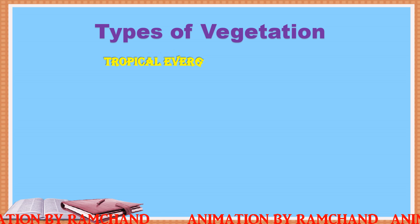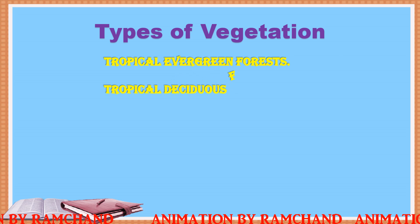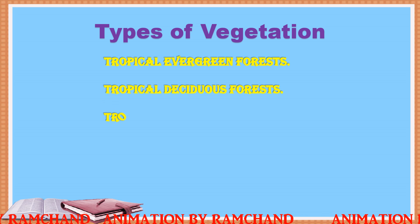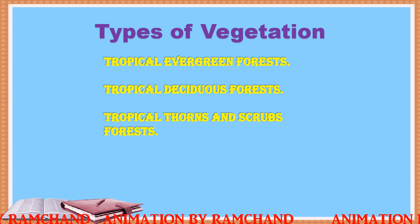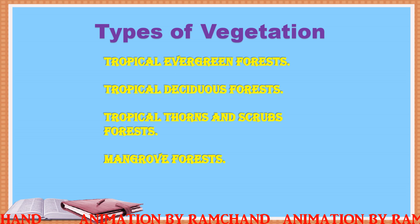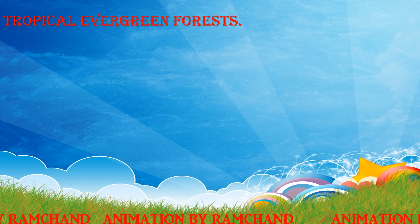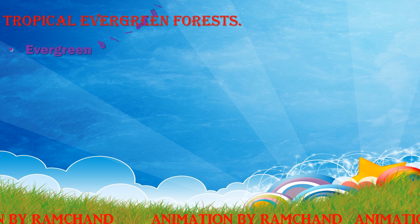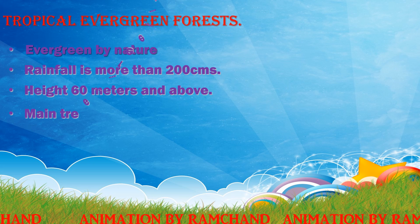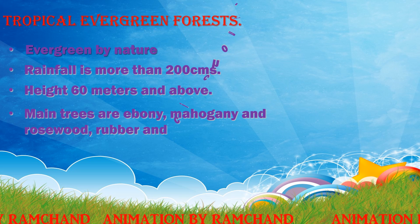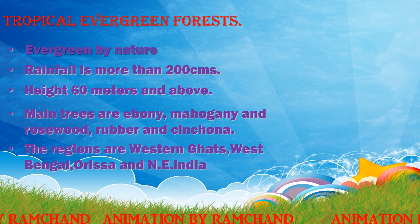Types of vegetation include tropical evergreen forest, tropical deciduous forest, tropical thorns and scrub forests, mangrove forest, and montane vegetation. Tropical evergreen forests are evergreen by nature with rainfall of more than 200 centimeters. Trees reach heights of 60 meters and above. Main trees are ebony, mahogany, rosewood, rubber, and cinchona. These forests are found in the Western Ghats, West Bengal, Odisha, and Northeast India.